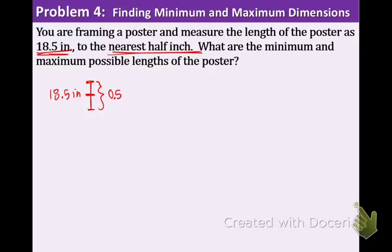18.5 is halfway in the middle. So that means what would each of those smaller sections be? They would be 0.25. Because you measured to the nearest half inch, the greatest possible error is 0.25. So what you do is take your measurement of 0.5 and divide by 2 equal sections. So we get 0.25 is the greatest possible error.